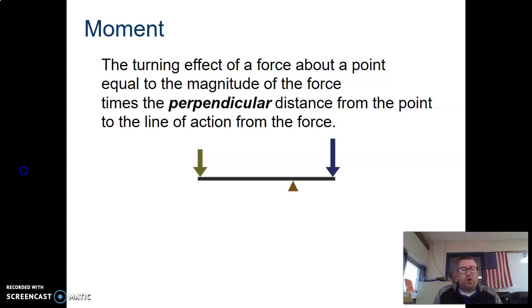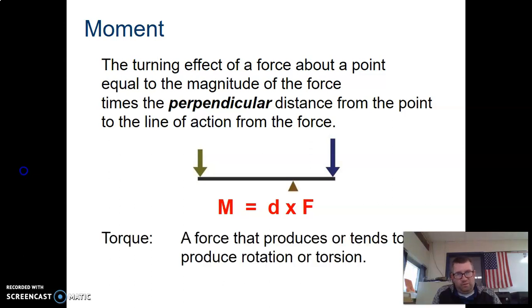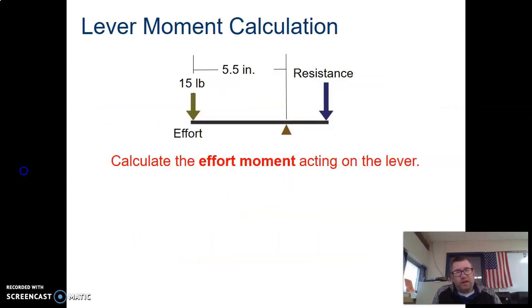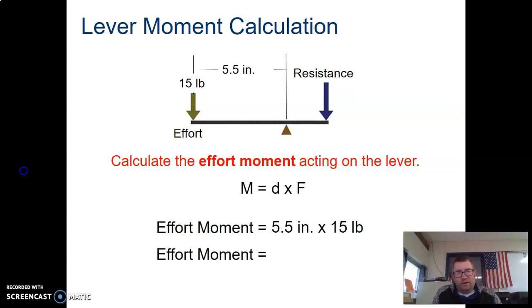Next we need to talk about moments. A moment is a turning effect of a force around a point equal to the magnitude times the perpendicular distance. You can think of this as a rotational force. It has the same formula as work, but remember work is parallel, moments are perpendicular. If I want to calculate a moment acting on the lever, I need to do the distance from the fulcrum to my effort multiplied by my pounds of effort, so 15 times five and a half, which would give me 82 and a half inch pounds.